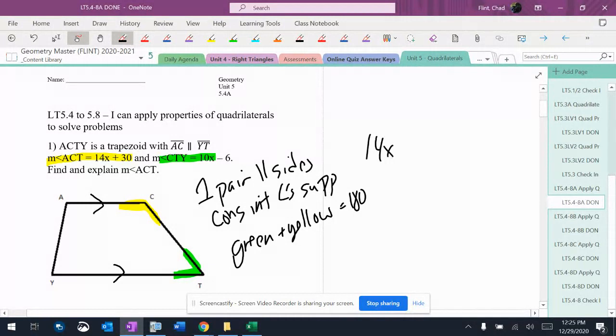So I make my equation: 14x plus 30 plus 10x minus 6 equals 180.